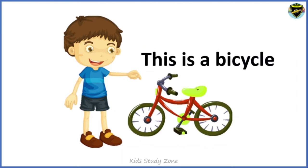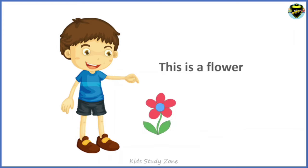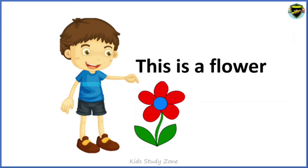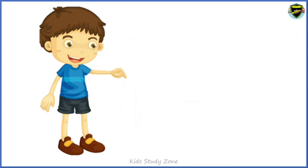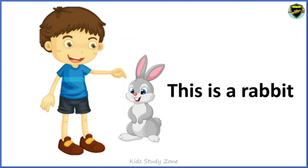This is a bicycle. This is a flower. This is a rabbit.